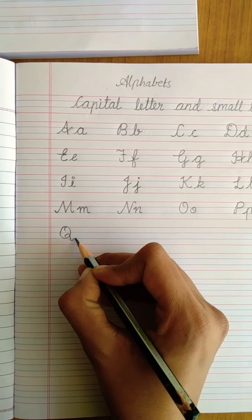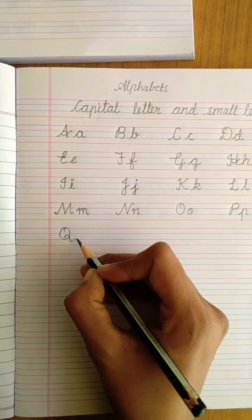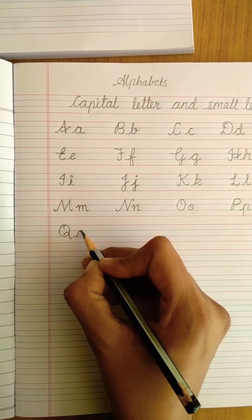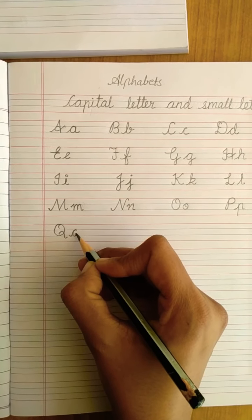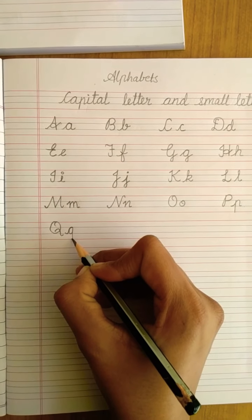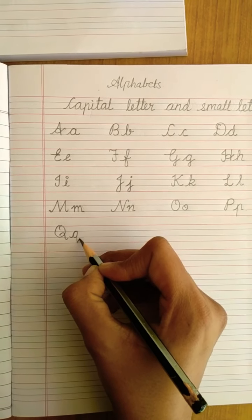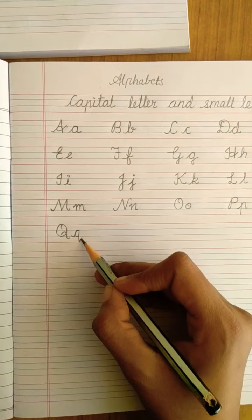Small letter Q. Start from second blue line, take a round, go up. Just like A how we write but come down to the last red line and give a back side slanting line Q.